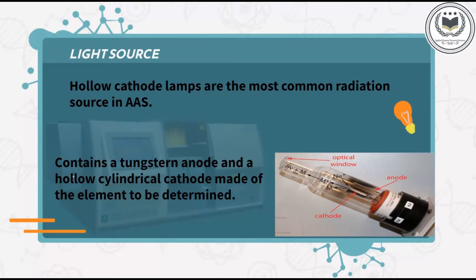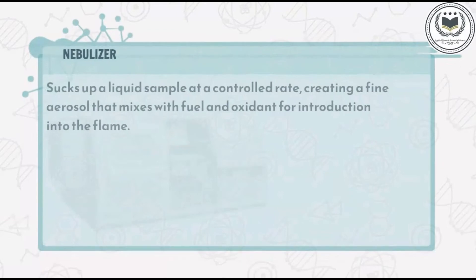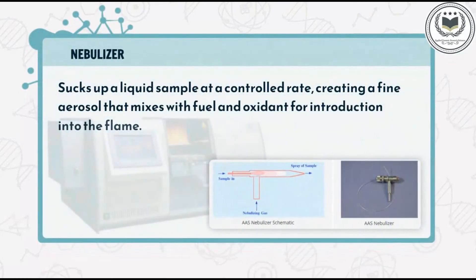The hollow cathode lamp contains a tungsten anode and a hollow cylindrical cathode made of the element to be determined. The nebulizer sucks up a liquid sample at a controlled rate and creates a fine aerosol that mixes with fuel and oxidant for introduction into the flame. Nebulization takes place as a result of the disruption of the liquid by the expanding vapor formed upon evaporation of part of the liquid in the tube.